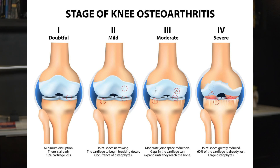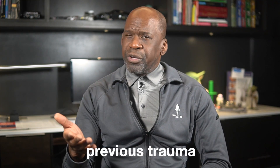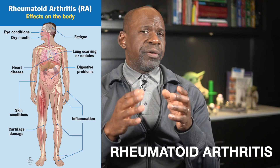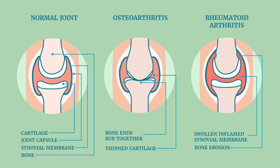Now let's talk about degenerative conditions. Osteoarthritis (OA) is a progressive degenerative joint disease characterized by the breakdown of articular cartilage, accompanied by osteophyte formation, synovial inflammation, and joint stiffness. Knee OA commonly affects older individuals but can also result from previous trauma, obesity, or genetic predisposition. Rheumatoid arthritis (RA) is an autoimmune condition characterized by chronic inflammation of the synovial membrane leading to joint destruction and deformity.